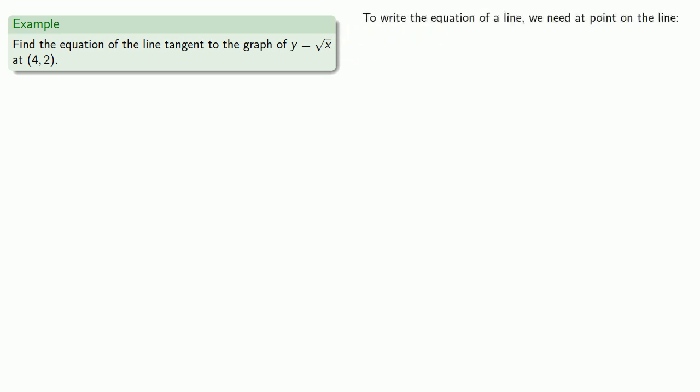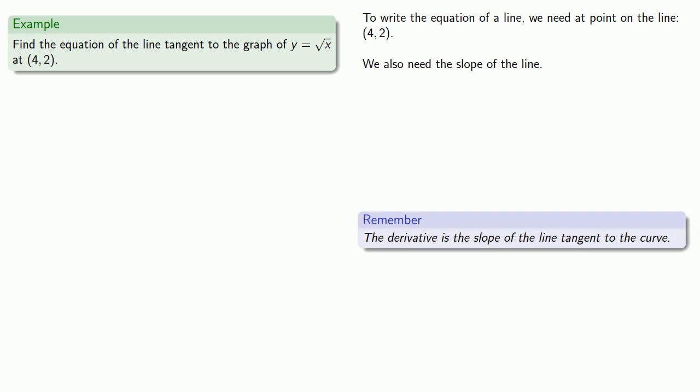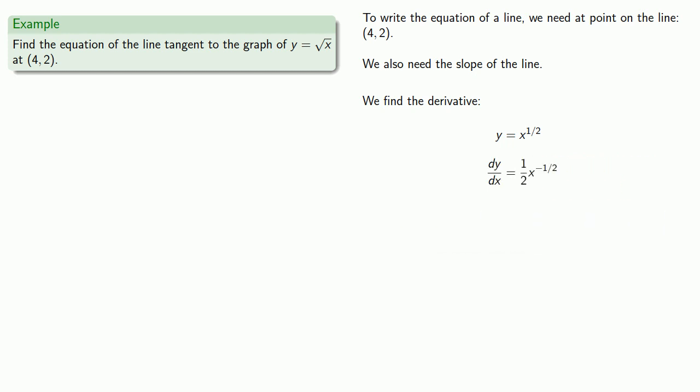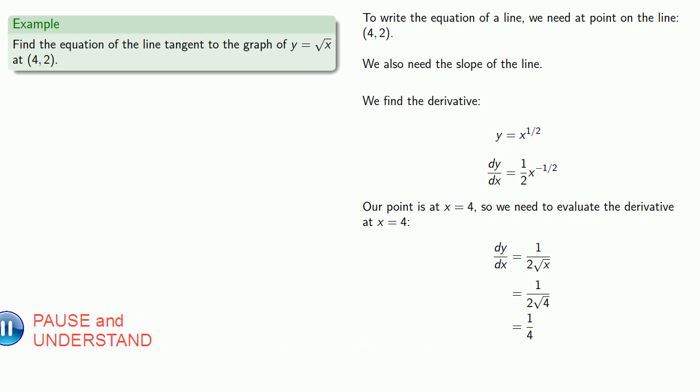To write the equation of a line, we need a point on the line. This point (4, 2) seems to be good. We also need the slope of the line. Remember, the derivative is the slope of the tangent line. So we'll find the derivative of y equals square root of x. Since our point is at x equals 4, we'll evaluate the derivative at x equals 4. It's easiest to do so if we rewrite the derivative without negative or fractional exponents. Our derivative is going to be 1 fourth. So we know the tangent line passes through the point (4, 2) with slope 1 fourth. So its equation is going to be...